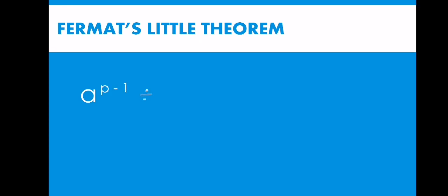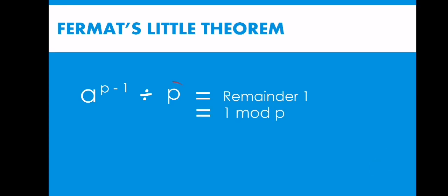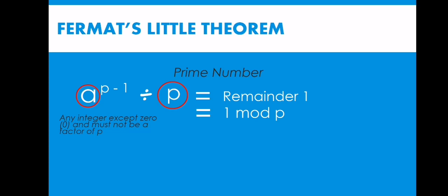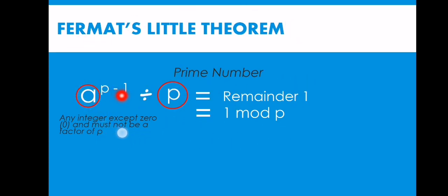Fermat's Little Theorem states that if we have an integer raised to p minus 1, divided by p, it will always yield a remainder of 1, or simply 1 mod p. Here, p represents a prime number, and a represents any integer except zero, and must not be a factor of p — meaning a and p must not share common factors. Prime numbers are numbers that have no factor aside from 1 and themselves.